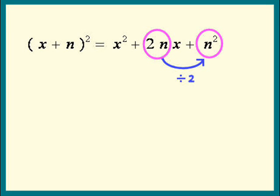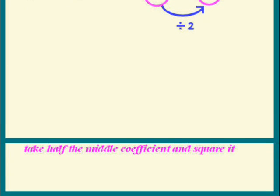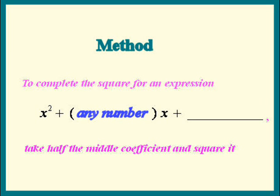That's the method of completing the square. Let's summarize our result. To complete the square for an expression of the form x squared plus any number times x, all we have to do is take half of that blue number and square it.